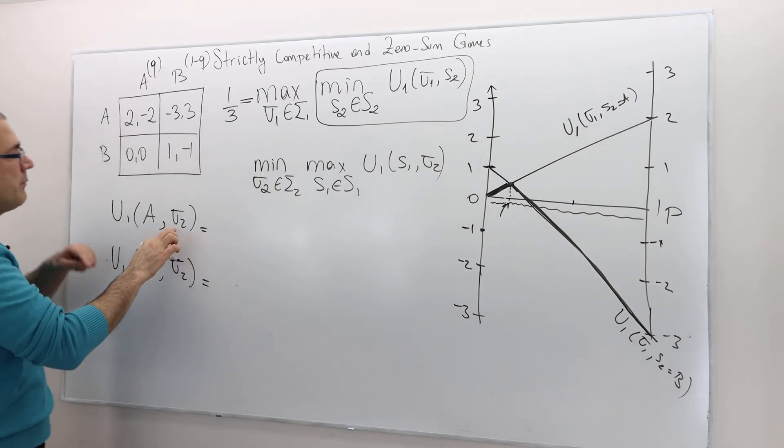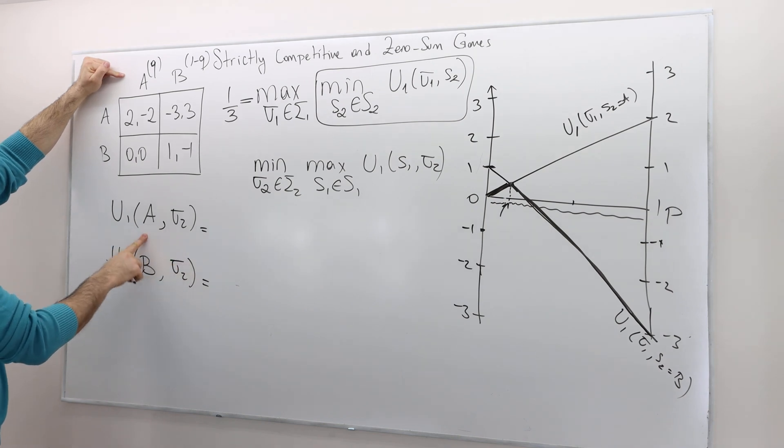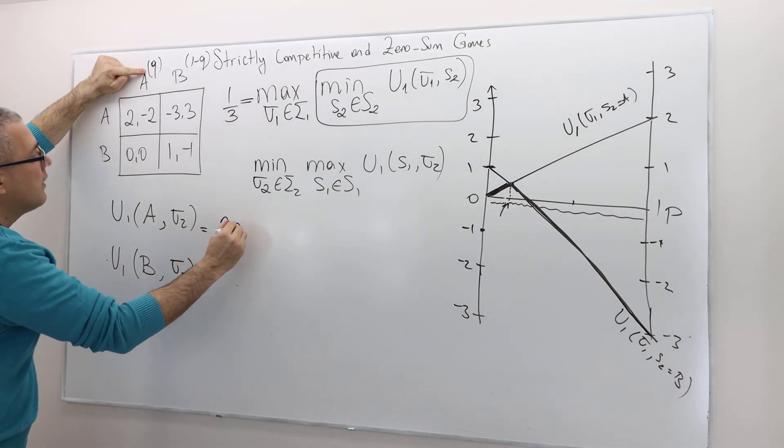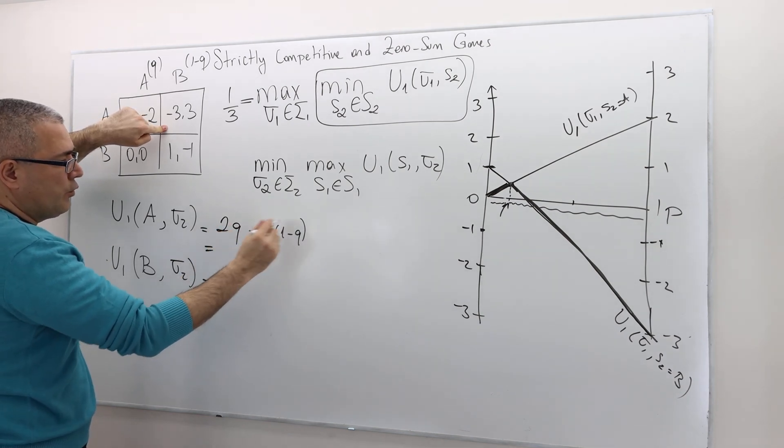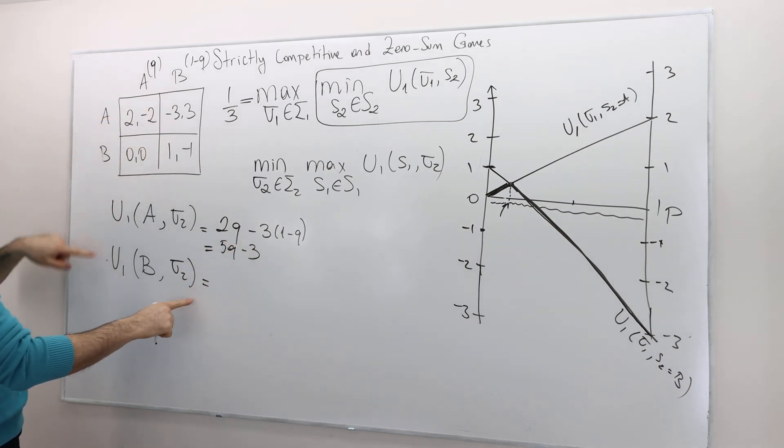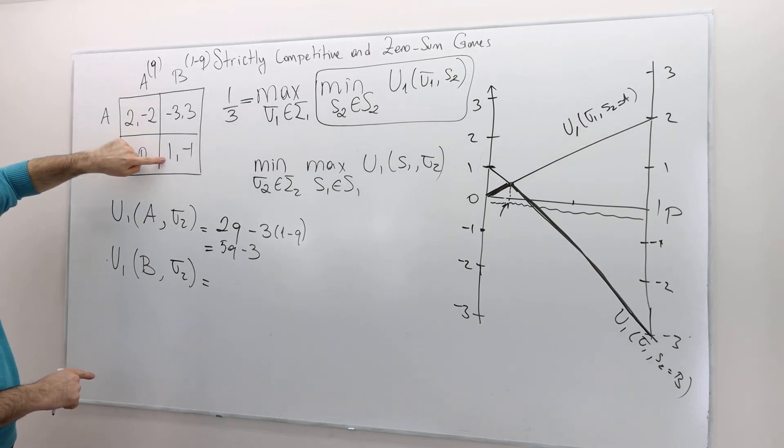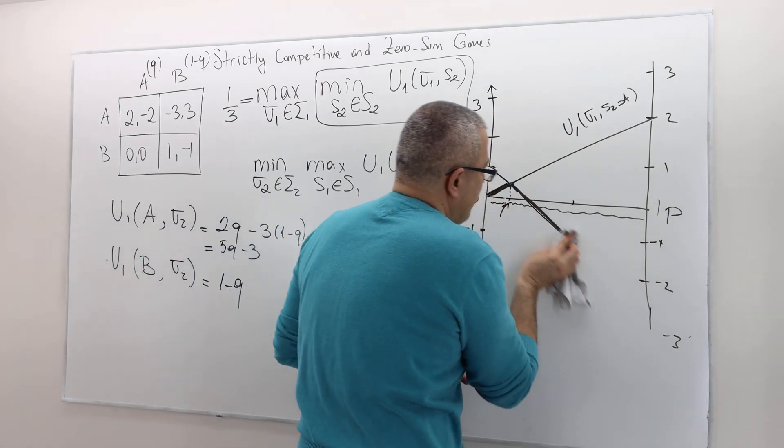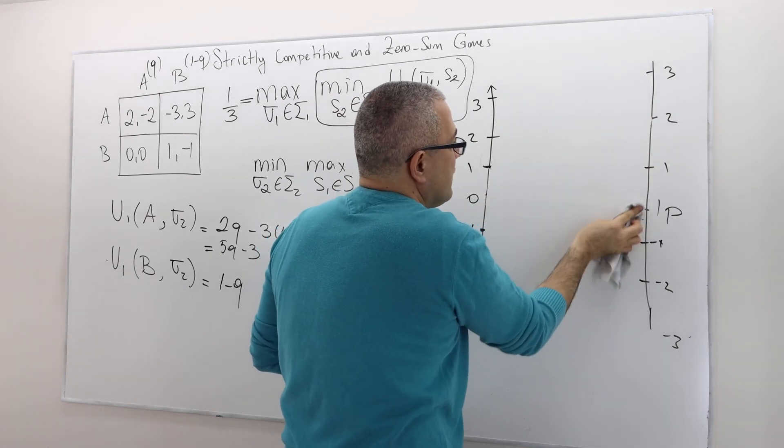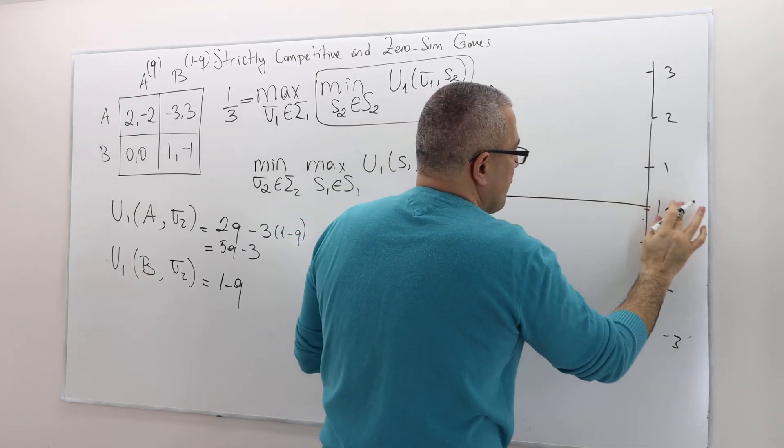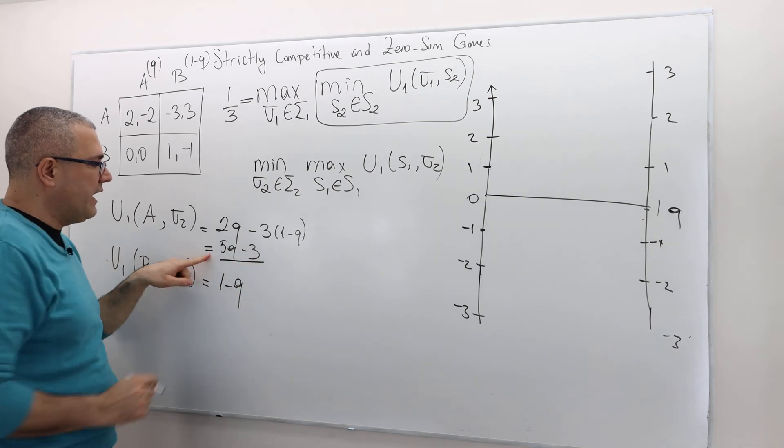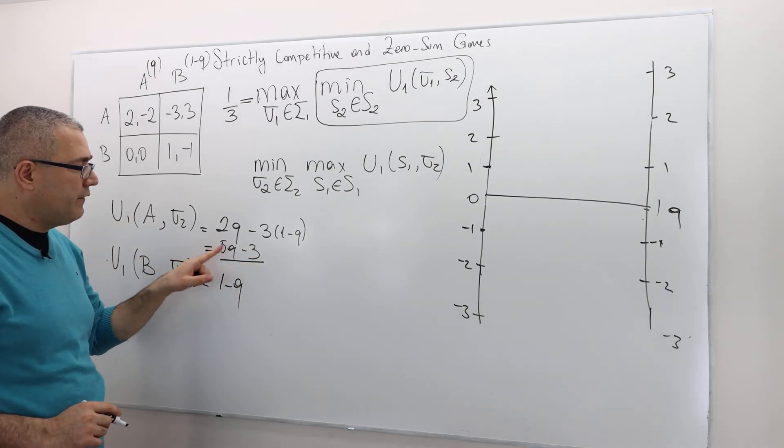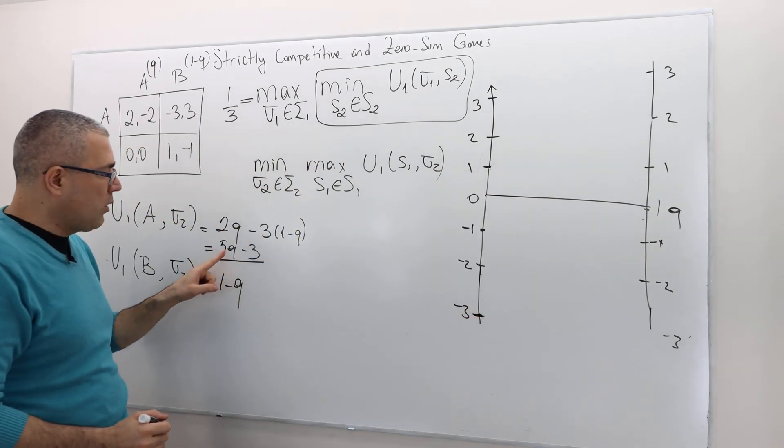So what are my payoffs? Well, given that my opponent is playing Q and 1 minus Q, or sigma 2, my payoff if I play A is 2 times Q plus minus 3 times 1 minus Q. So it's nothing but 2Q plus 3Q, 5Q minus 3. And here, when I play B, I'm going to get 0 with Q probability and 1 with 1 minus Q probability. So it's just 1 minus Q. So therefore, I am going to retain everything else except those graphs, those linear functions. So once again, this is from 0 to 1, but this is Q value. So once I fix sigma 2, the Q, what is the expected utility if I play A? Well, it's 5Q minus 3. So if Q is 0, it's going to be minus 3. If Q is 1, it's going to be 2.